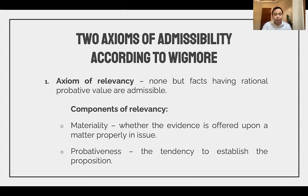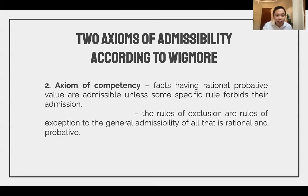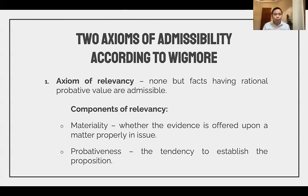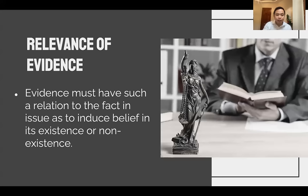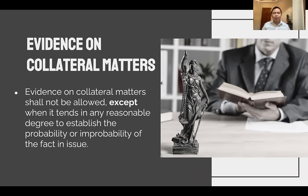There are two axioms of admissibility according to Wigmore. Before an evidence can be admitted, you must fulfill these two axioms. First, the axiom of relevancy — meaning there is a rational probative value or rational connection between the evidence and the fact in issue. Second, the axiom of competency — meaning it is not excluded by the rules. Under relevancy, it must have materiality and probativeness. Relevancy means that the evidence has a logical connection to the fact in issue as to induce belief in its existence or non-existence.